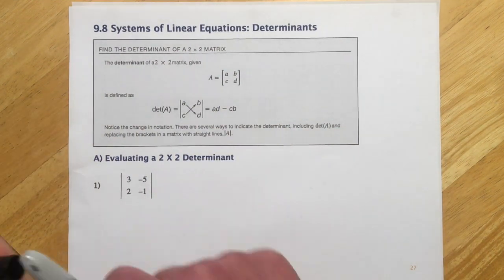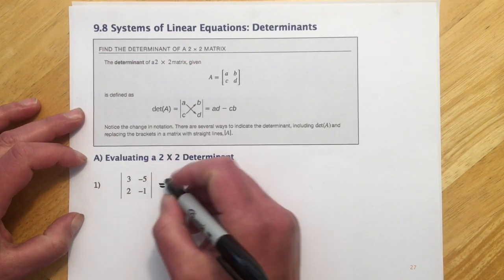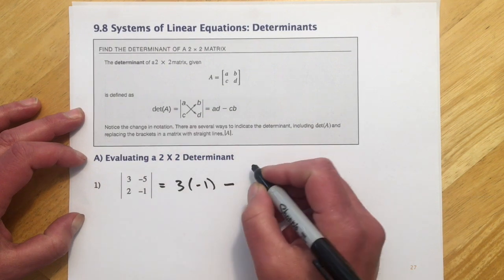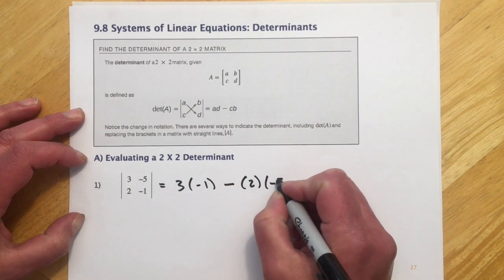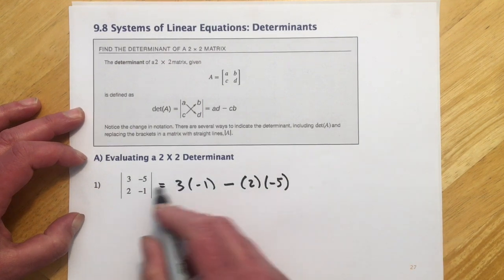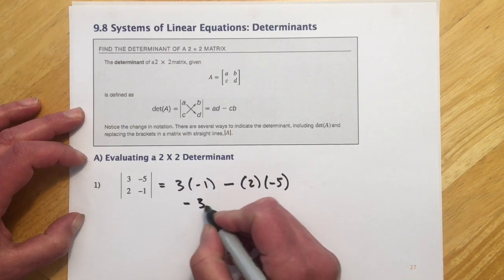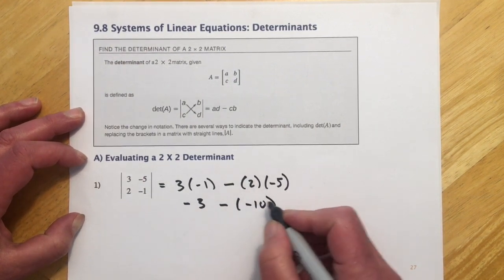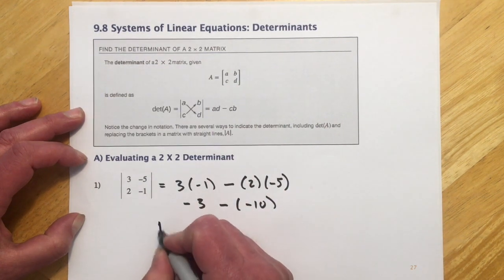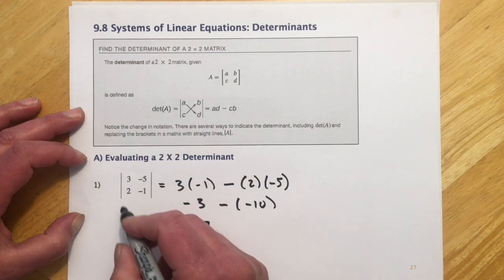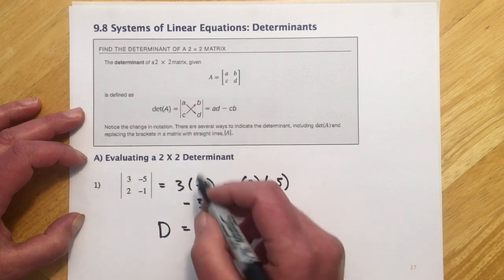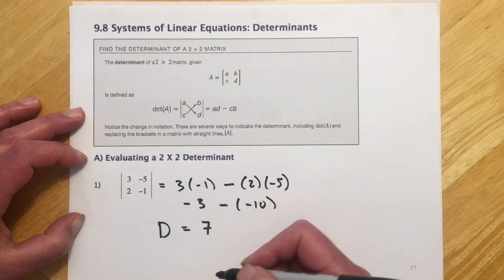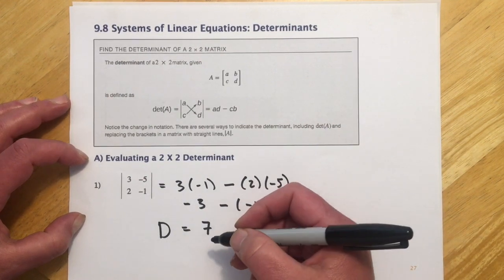We have one right here, so I'll write it all out. We're going to go 3 times negative 1, and then minus 2 times negative 5. You don't have to show all these steps, but I'm just showing where the pieces land. So this would be negative 3, and then minus a negative 10, so negative 3 plus 10. I usually abbreviate it as D — there are a couple of notations like absolute value bars or 'det', but I just use D. The determinant on this one would be 7.